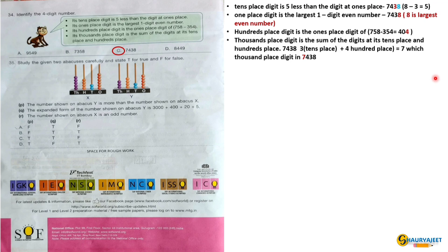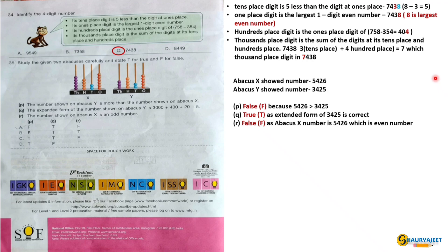Question 35: Study the given 2 Abacus carefully and state T for true and F for false. Abacus X showed number 5426, Abacus Y showed number 3425. The number shown on Abacus Y is more than the number shown on Abacus X - false, because 5426 is greater than 3425. The expanded form of number shown on Abacus Y is 3000 plus 400 plus 20 plus 5 - true. The number shown on Abacus X is an odd number - false, as Abacus X number is 5426 which is even number. So the correct option is option A.